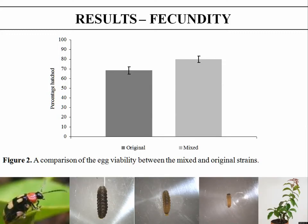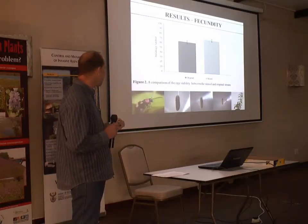For fecundity, our results showed that the mixed population with higher genetic diversity produces a lot more eggs. They produce more egg batches, more eggs per batch, as well as more larvae hatching from the eggs, and these differences were also deemed to be statistically significant.